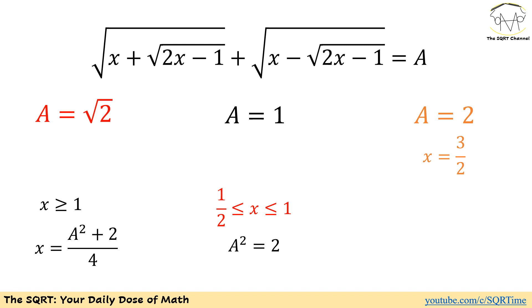For A equal to 1, you can see that x is going to be 3 over 4 and it contradicts with the condition that we have, which says x needs to be greater than 1. So, for A equals to 1, we have no answer.